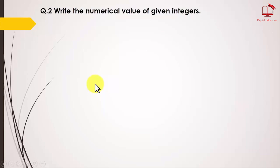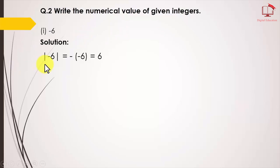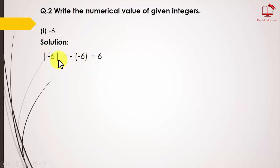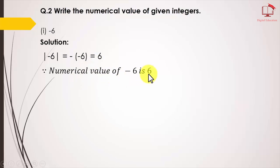Question number 2: Write the numerical value of the given integers. For minus 6, we draw a bar over it. When we remove this bar, we have a minus sign. Since the integer already has a minus sign and the bar also gives a minus, minus times minus becomes positive. So the numerical value of minus 6 is 6.